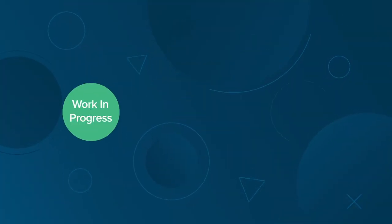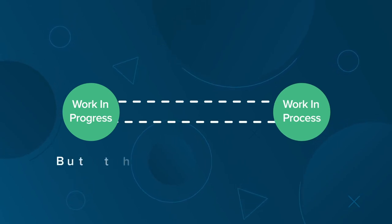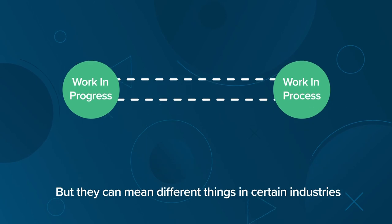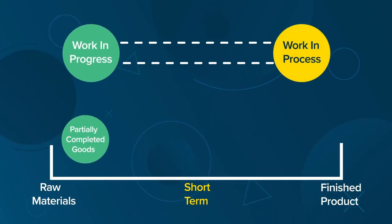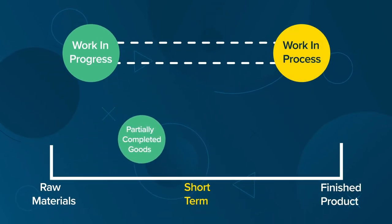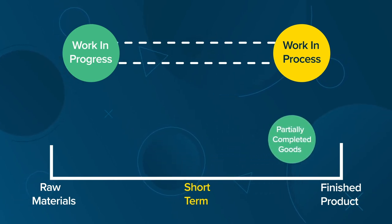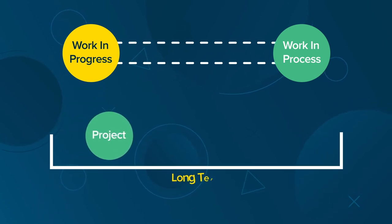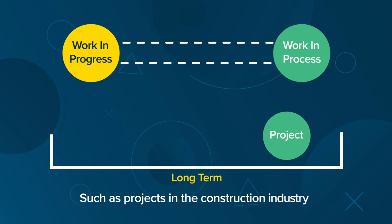Work in progress and work in process are used interchangeably most of the time, but they can mean different things in certain industries. In general, work in process inventory refers to partially completed goods that move from raw materials to a finished product within a short time frame. Work in progress refers to the costs associated with projects over a long period of time, such as projects in the construction industry.